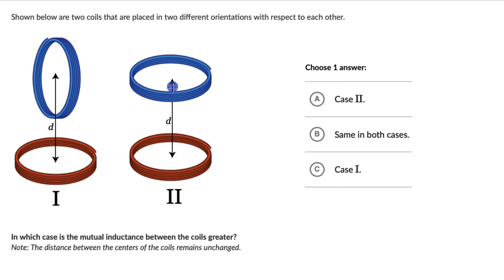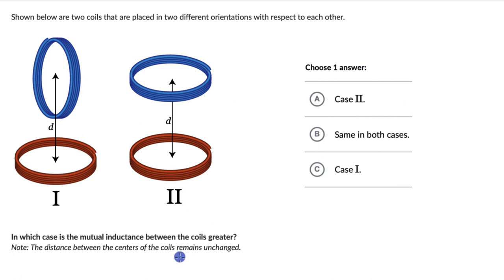Let's solve a couple of questions on factors that affect mutual inductance. For the first one, we have two coils placed in two different orientations with respect to each other. In which case is the mutual inductance between the coils greater? The distance between the centers, D, remains unchanged. Choose one answer out of these three options.